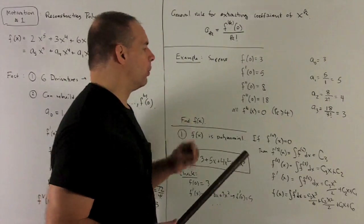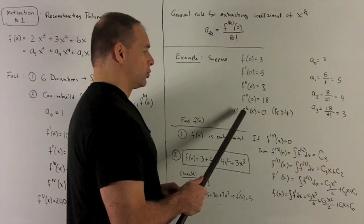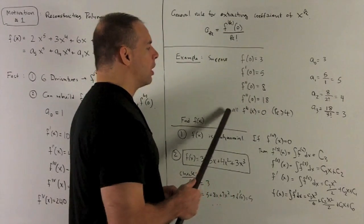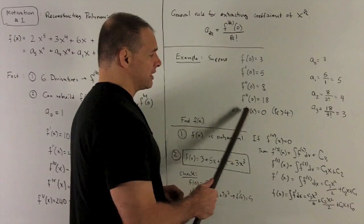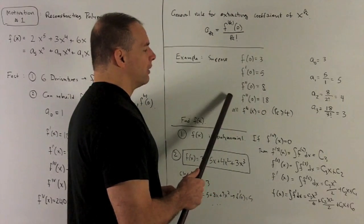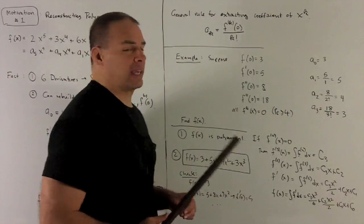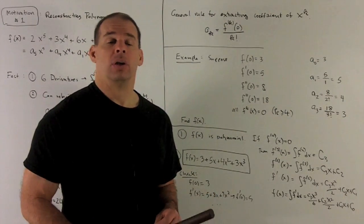General rule: If I have the n+1 derivative going to exactly 0, entirely as a function, not just at a point, and if the nth derivative is going to be non-zero at one point, then I'm going to be looking at a polynomial of degree n.